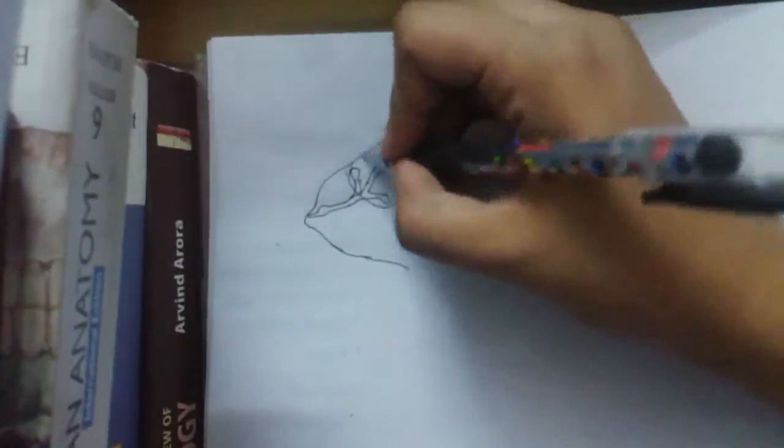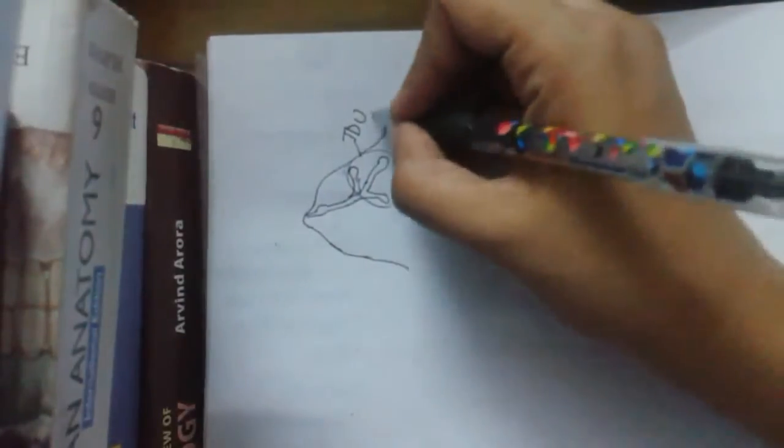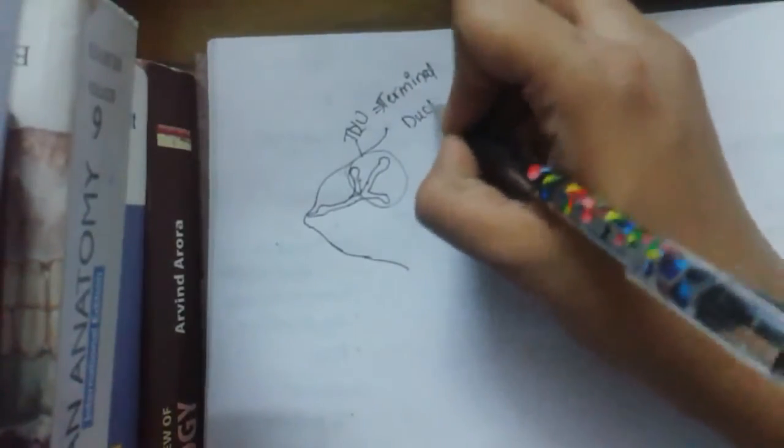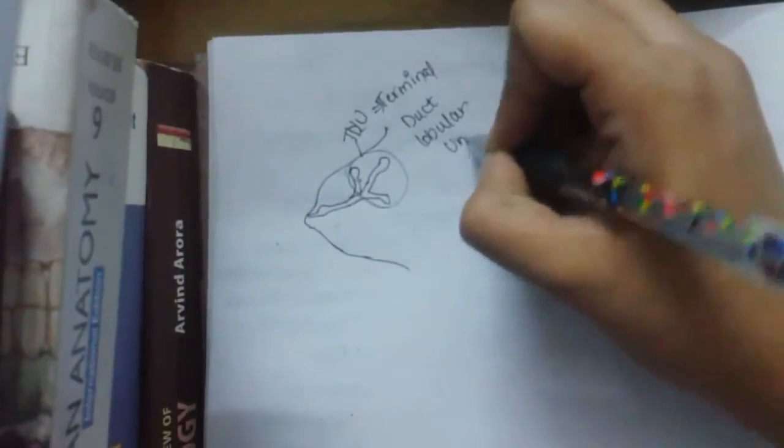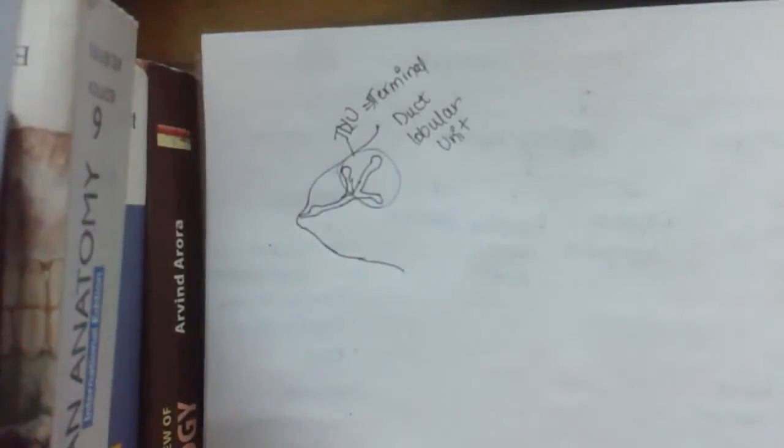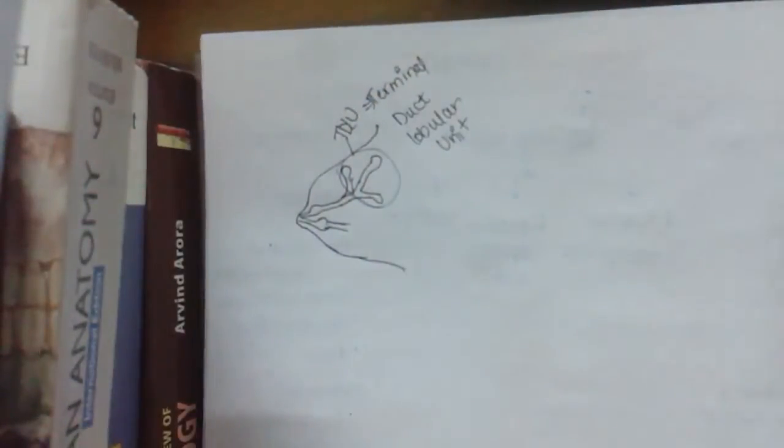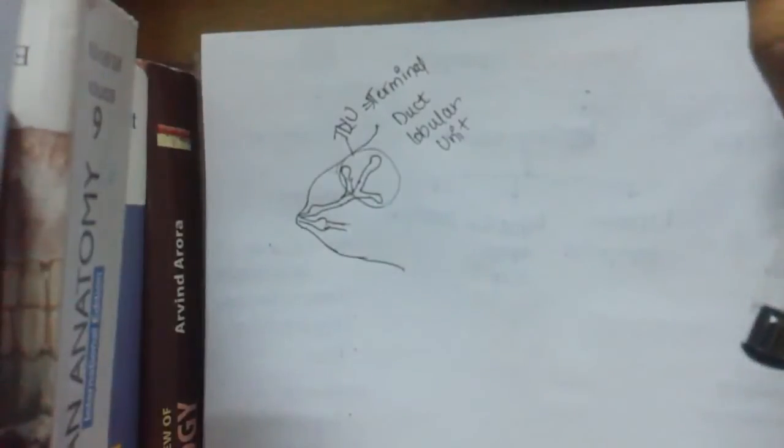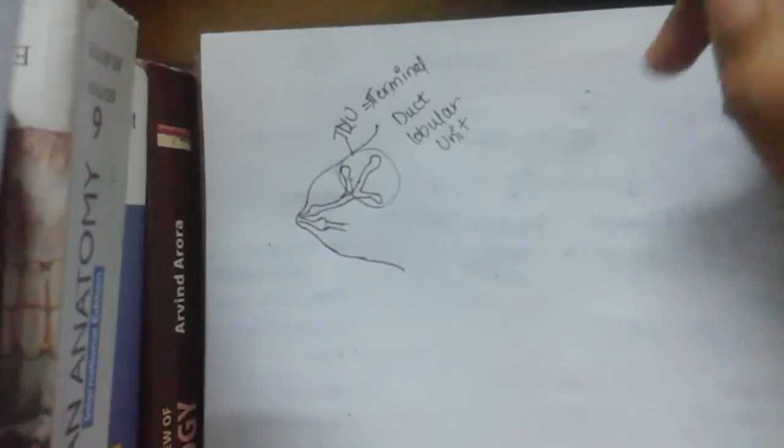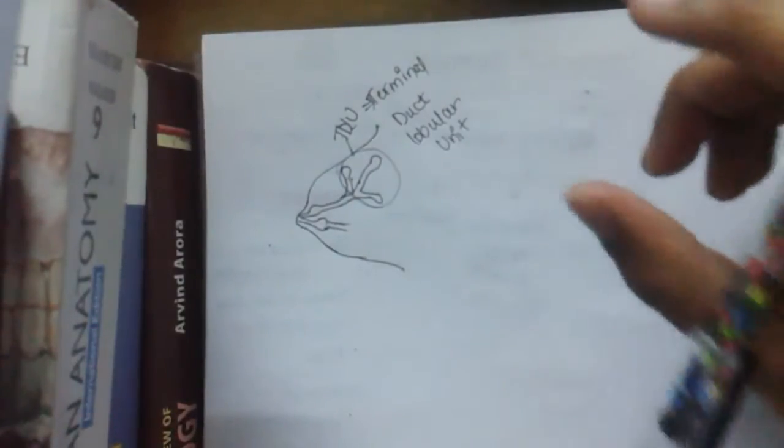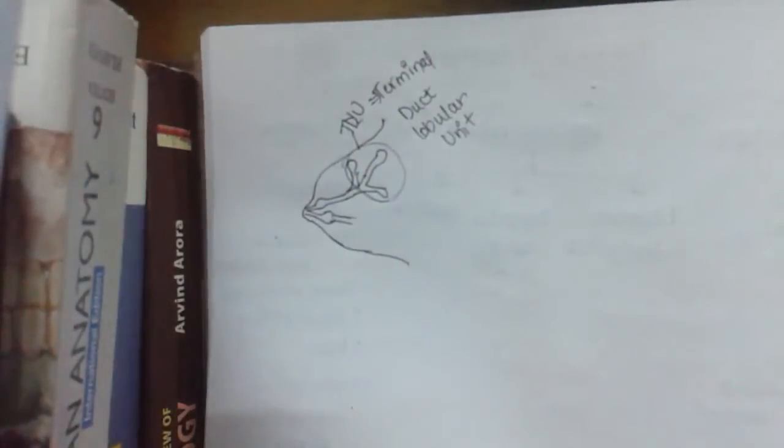This part is called terminal ductal lobular unit. The rest all I have already dealt in anatomy. This is a new word which you will be hearing here again and again. This is the epithelial component. Whereas stromal component is the stroma between the two ducts, made up of connective tissue. This stromal component is of two types: intralobular stroma and interlobular stroma. Intralobular is inside a lobe whereas interlobular is between the two lobes.